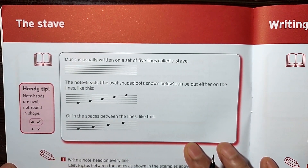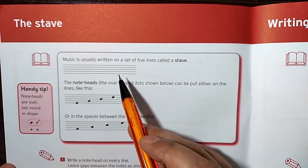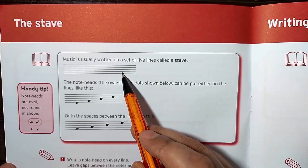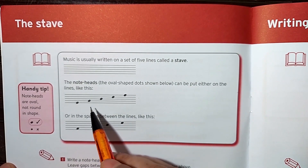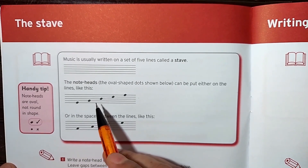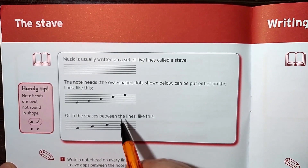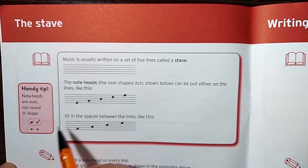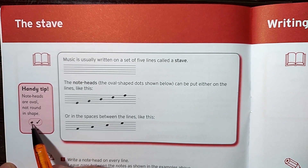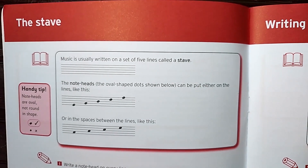Today we are going to cover the first topic: the stave in Grade One. What is a stave? A stave is a pattern of five lines, and there are two ways we put notes in the stave — on the line or in the space. There is no other way. An important thing: make sure the note shape should be an oval shape, not a circular shape. Let's start the first exercise.